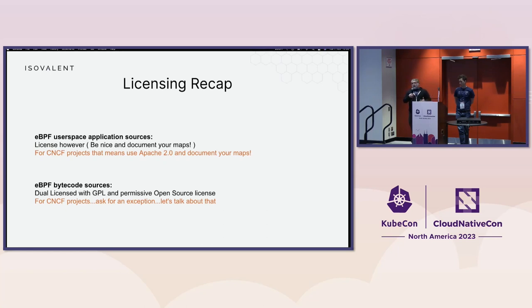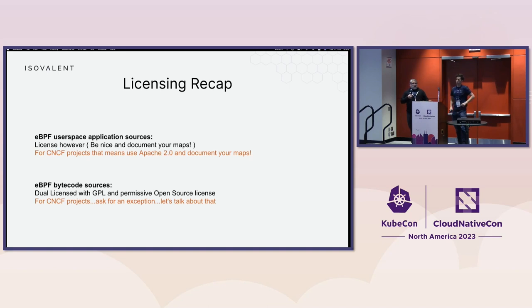A quick licensing recap: after all of this, user space effectively can be licensed however you want. If you're a CNCF project, that's not true — you have to abide by the CNCF policy and pick a license that CNCF is okay with. And then for the BPF bytecode side, generally you're going to want to choose a dual license with the GPL with some other permissive open source license. For CNCF projects, that has been an exception to the rule. So let's talk about that now.